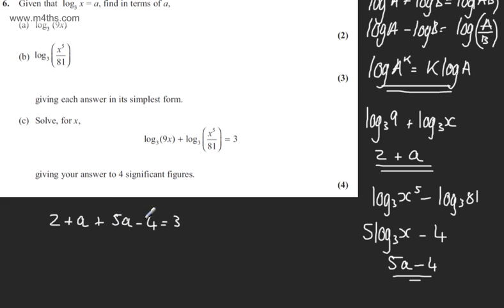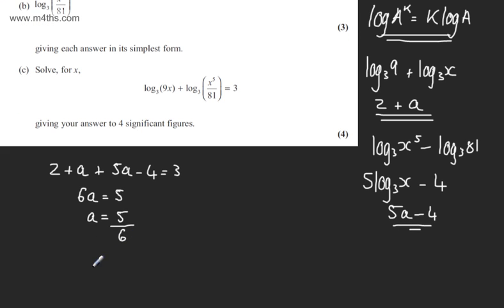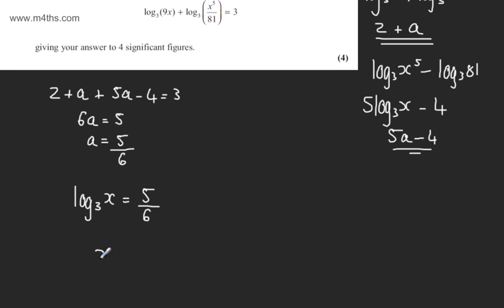So we have now here that 6a will be equal to 7 minus 2, which is going to give us 5, which gives us now that a will be equal to 5/6. Now at this stage, if we state now that log to the base 3 of x is equal to a, we can say now that log to the base 3 of x is equal to 5/6. Rewriting now the exponential equivalent, we can say that x is going to be equal to 3 to the power of 5/6, and we can go ahead and evaluate this.